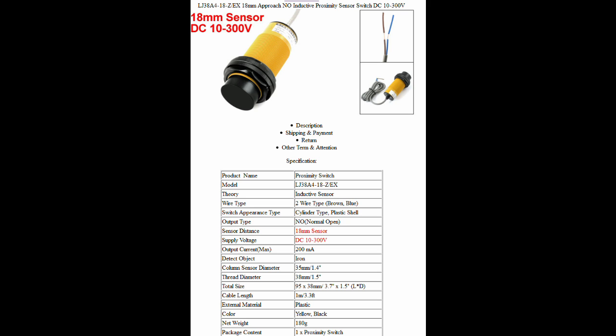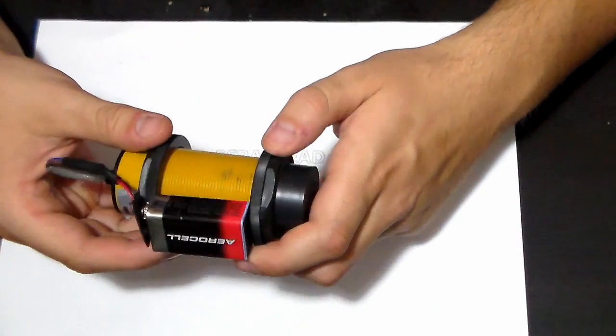Even though the data sheet shows that the sensor is made for 10 to 300 volts DC, it also runs perfectly with 9 volts.